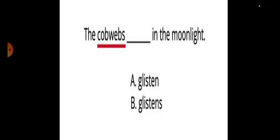This is a query for you. Guess which one is right: the cobwebs dash in the moonlight, glisten or glistens? Tell me, is your subject singular or plural? Definitely it is cobwebs, it means they are more, they are plural. So now you have to choose glisten or glistens, definitely glisten. Glisten means they glitter, they shine.